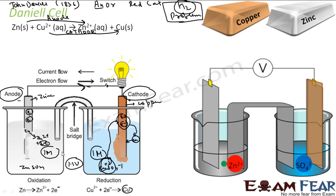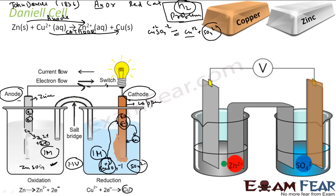After this reaction, there will be a lot of Zn2+ ions building up on the zinc side. On the copper side, CuSO4 is a strong electrolyte that dissociates into Cu2+ and SO4 2−. The Cu2+ is being used up, but SO4 2− remains, creating a lot of excess SO4 2− on the copper side. This creates a charge difference between the two beakers, which is not good.